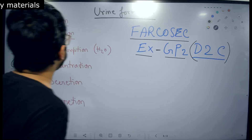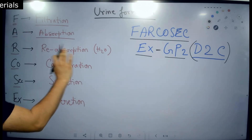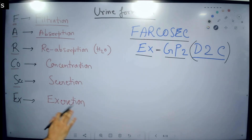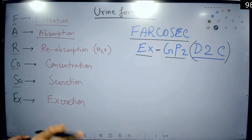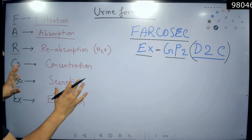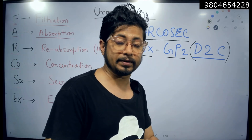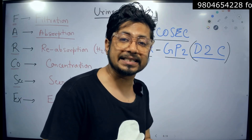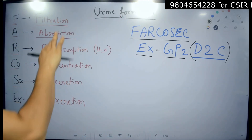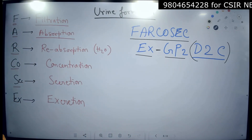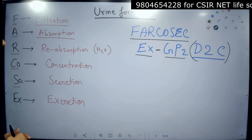So here we have all the steps laid together: filtration, absorption, reabsorption of water, concentration, secretion, excretion — steps of urine formation involving the nephron. Now, what you need to understand is the parts of the nephron involved in this process — what are the parts and how they are involved.